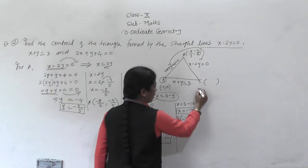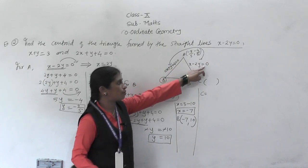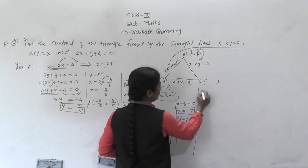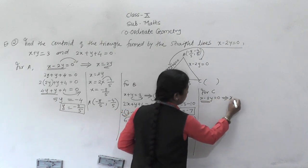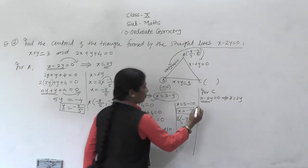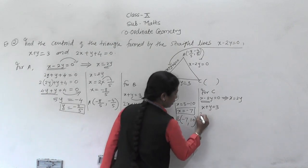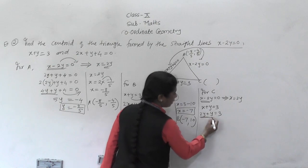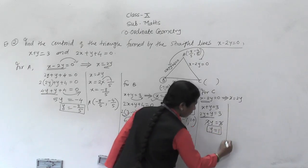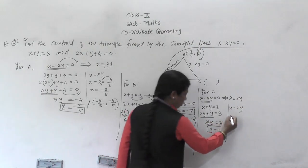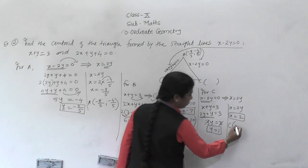For vertex C, we solve x − 2y = 0 and x + y = 3. From the first: x = 2y. Substituting: 2y + y = 3 → 3y = 3 → y = 1. Then x = 2(1) = 2. So C = (2, 1).